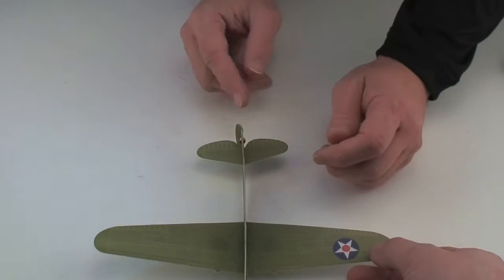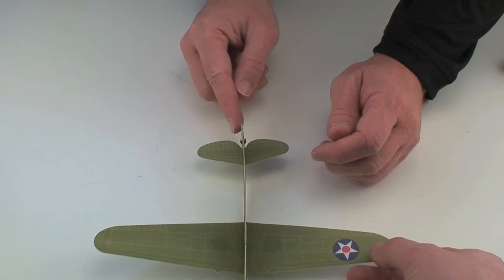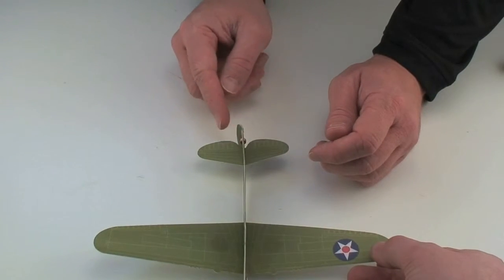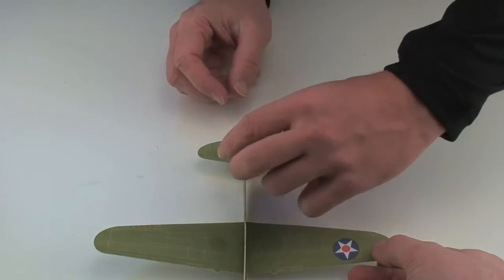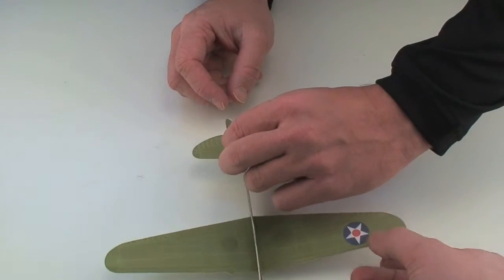Usually on a model we'd like the hinge to return to center. This one's not really returning to center as you can see the rudder is leaning to the right side there.